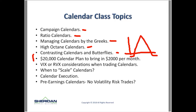We'll cover VIX and RVX considerations when trading calendars — how to use the VIX or RVX to tell you when to put on certain types of calendars. And when to scale calendars: if I'm using $20,000 for calendars, when would I only put a third of my capital to work versus all of it? We'll talk about the market conditions and what metrics I would use for scaling.